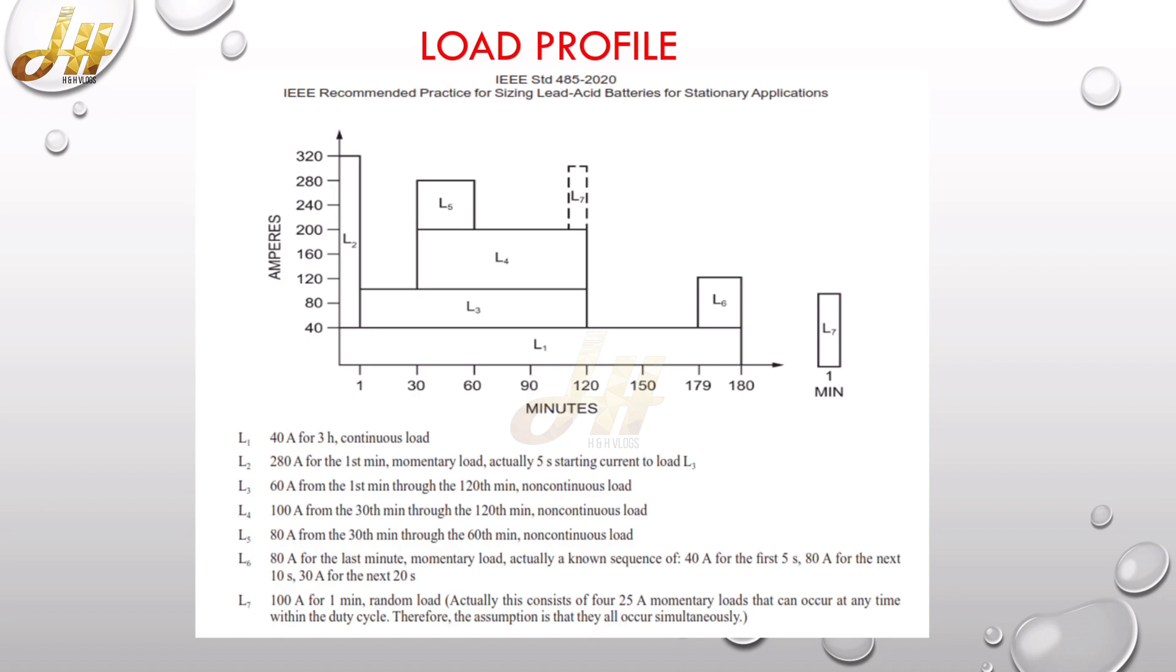Now you can see L1 is continuously for three hours, which is 40 ampere, and L2 is 280 ampere. So the instant load at minute one is 320, which is 280 plus 40 ampere. Likewise, the different loads are mentioned below: L2 is 280 ampere, L3 is 60 ampere, L4 is 100 ampere, and L5 is 80 ampere.